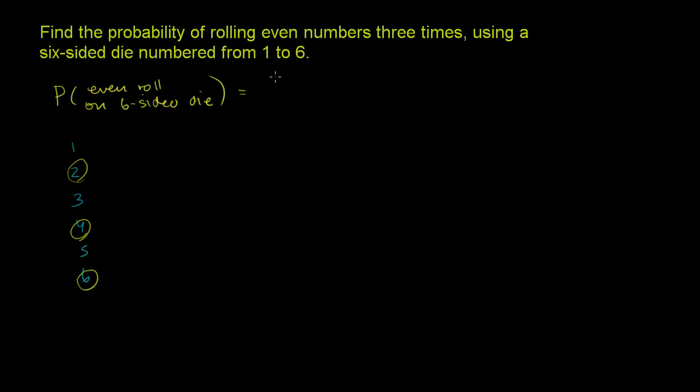So the probability is the events that match what you need, your condition right here. So three of the possible events are an even roll, and it's out of a total of six possible events. So there is a 3 over 6, which is the same thing as 1 half probability of rolling even on each roll.